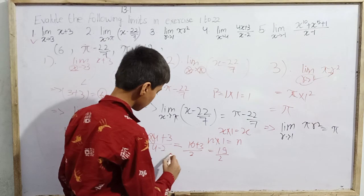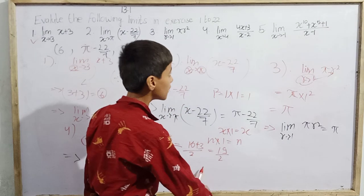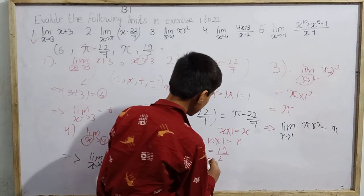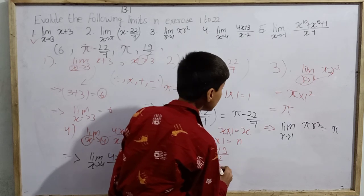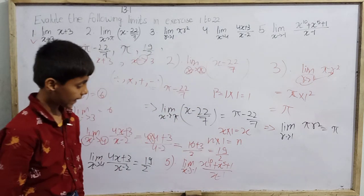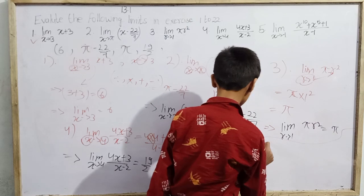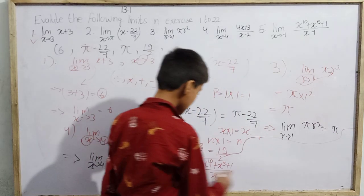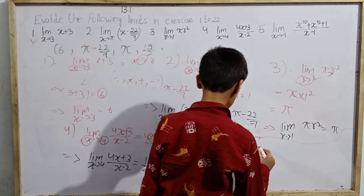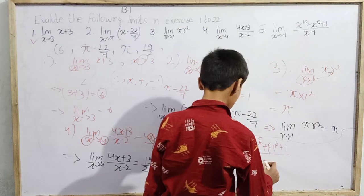Now the fifth question: limit x tends to −1 of (x¹⁰ + x⁵ + 1)/(x − 1). The value of x is −1. I put x = −1: the numerator becomes (−1)¹⁰ + (−1)⁵ + 1, and the denominator becomes −1 − 1.